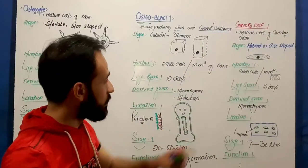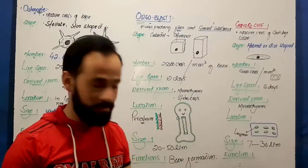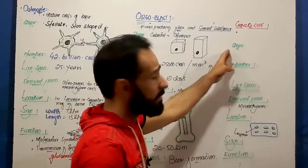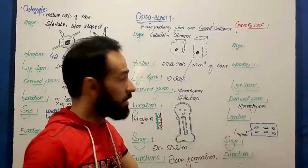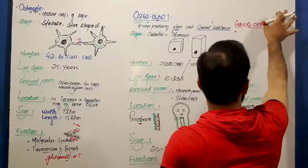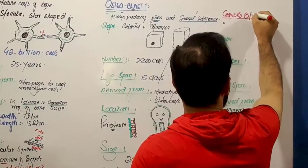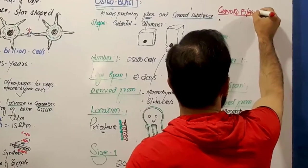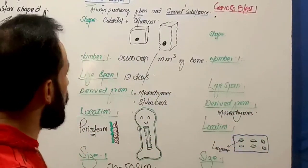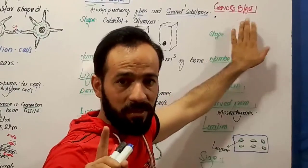Now we are discussing about the chondroblast cell. Let us use the same titles and explain about the chondroblast cell. I hope you are clear about the blast and the cyte from the previous lecture. Please watch those lectures.